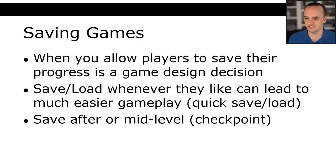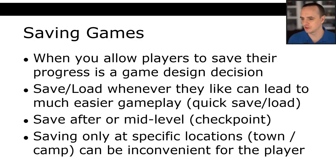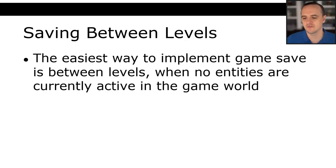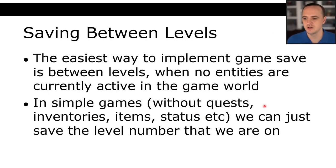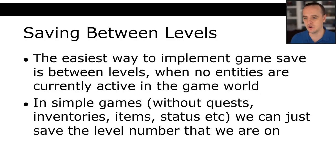A lot of games allow saving after a level or at a midpoint — that would be a checkpoint. Or they implement save locations, so you can only save at specific locations like a town, camp, or a glowing spot. Saving between levels is probably the easiest way to implement save games when no entities are active in the game world. In simple games with no quests or inventories, all you need to save is the level number. For example, in Super Mario Brothers, if we can say the player is on world 4, level 3, that could be a save between discrete levels.